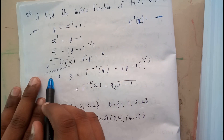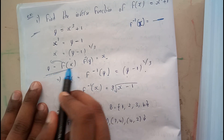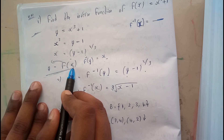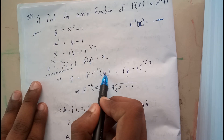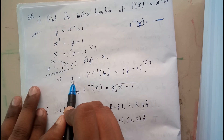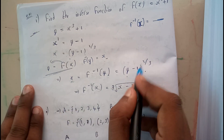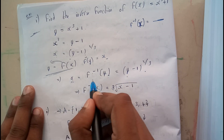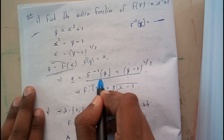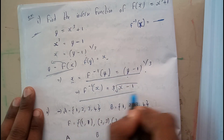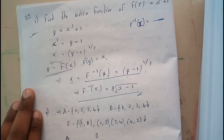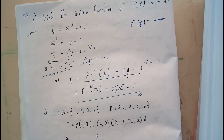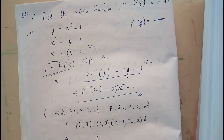Initially we assumed y equals f of x, from that we can say f inverse of y equals x, where x equals y minus one whole to the power of one by three. Replacing y with x, we get f inverse of x equals the cube root of x minus one. Hence this is the inverse function of the given equation. I hope everyone understood. Thank you for watching.